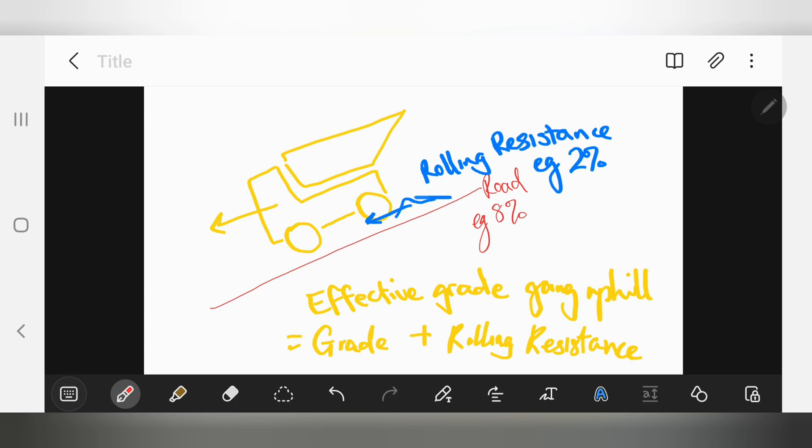If on the other hand, we were in the same truck travelling downhill, then the grade is causing us to speed up, but the rolling resistance is opposing that movement, slowing us down. In that case, the effective grade is the grade minus the rolling resistance.